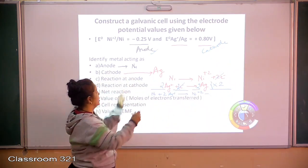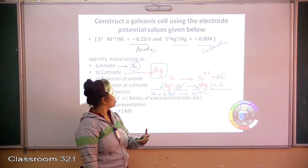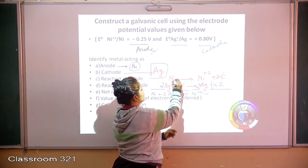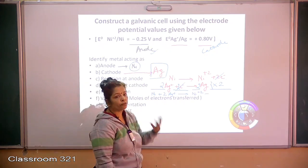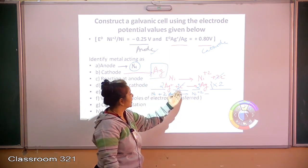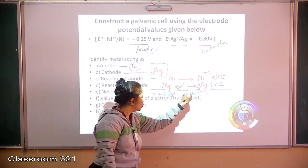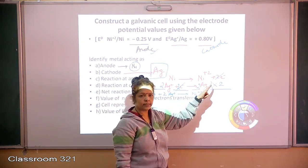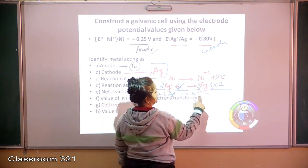Hence the anode is nickel and the cathode is silver. Reaction at the anode is always oxidation — nickel loses electrons to become Ni²⁺ and 2 electrons. Reaction at the cathode is gain of electrons — silver ions gain electrons to become silver. I've multiplied the second equation by 2 so that the electrons cancel out. The net reaction becomes: Ni + 2Ag⁺ → Ni²⁺ + 2Ag.